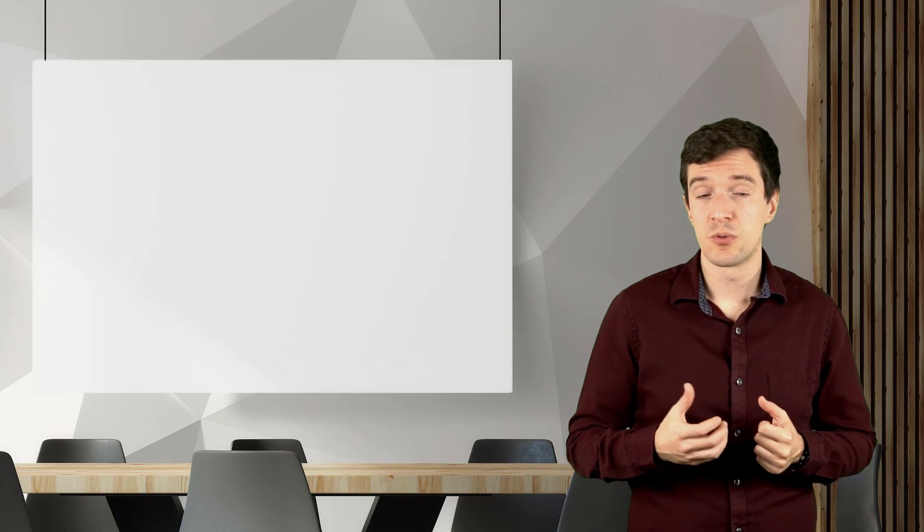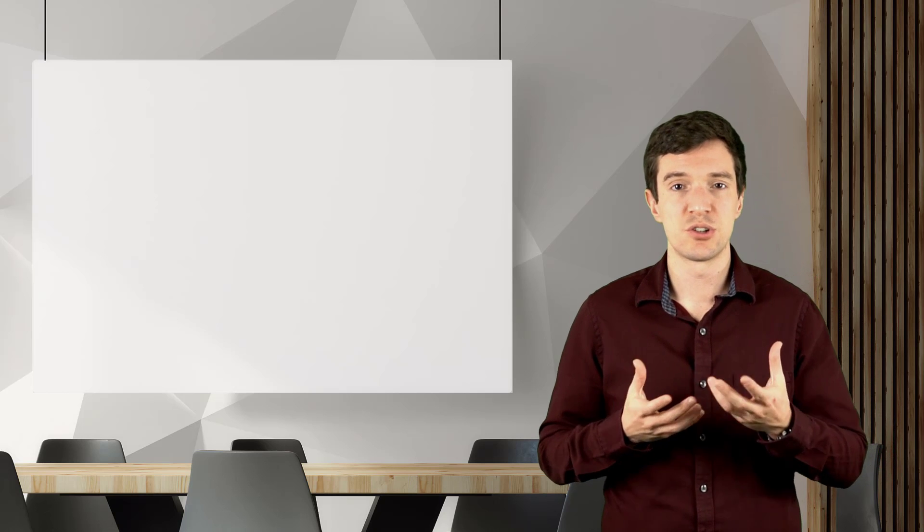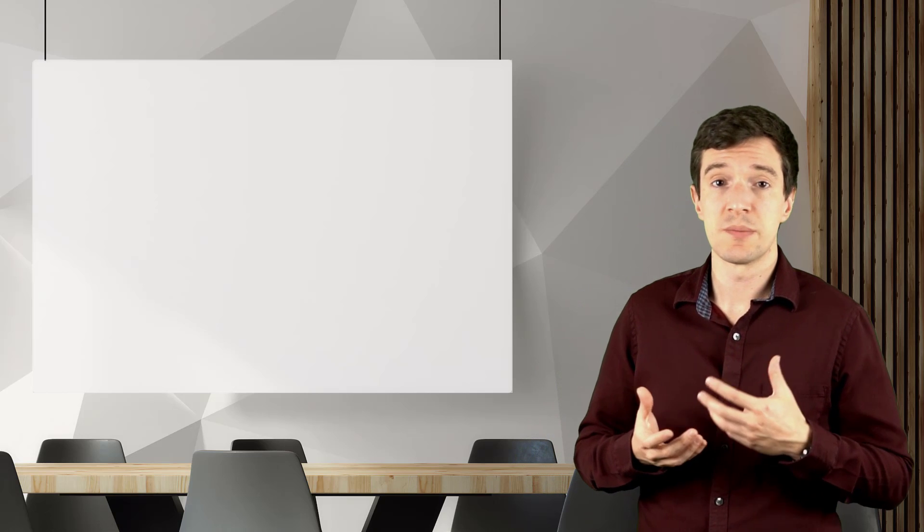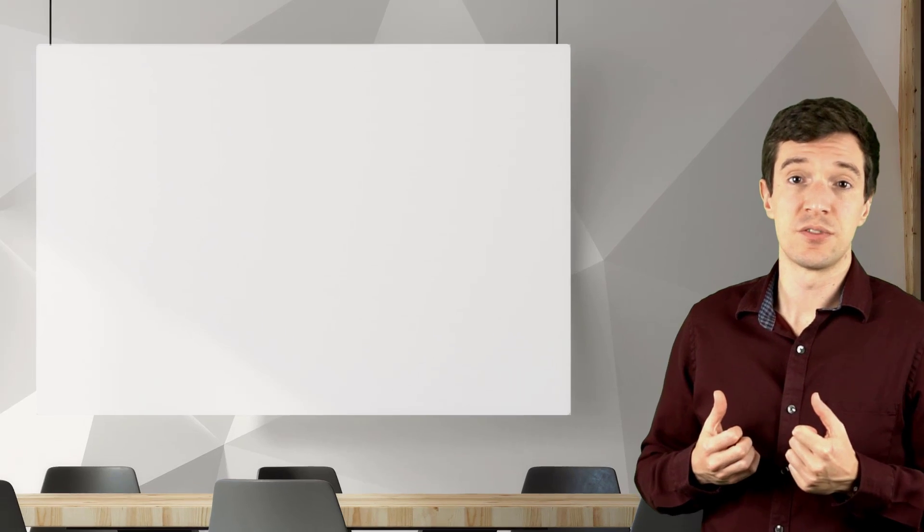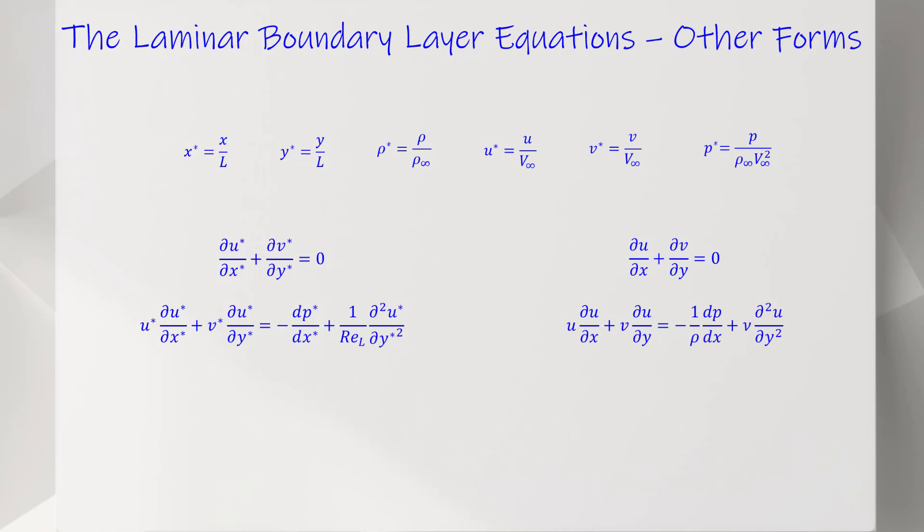It is possible to find the laminar boundary layer equations expressed in different forms, other than the one we presented here, due to different choices for the non-dimensional quantities. Here, for example, you can see that if the variables are not scaled by the Reynolds number, we will obtain this final expression for the non-dimensional form of the governing equations. And this will be their dimensional form, presented here on the right.